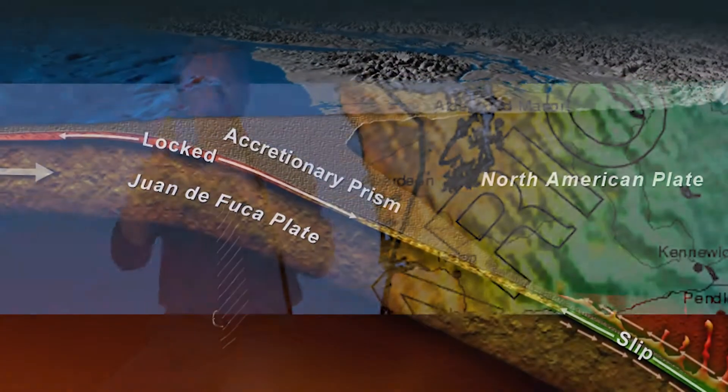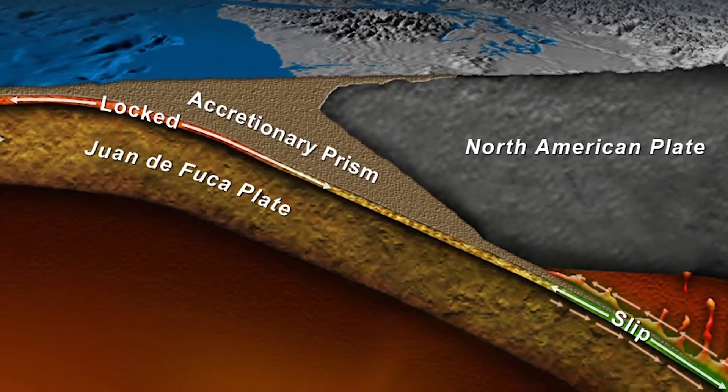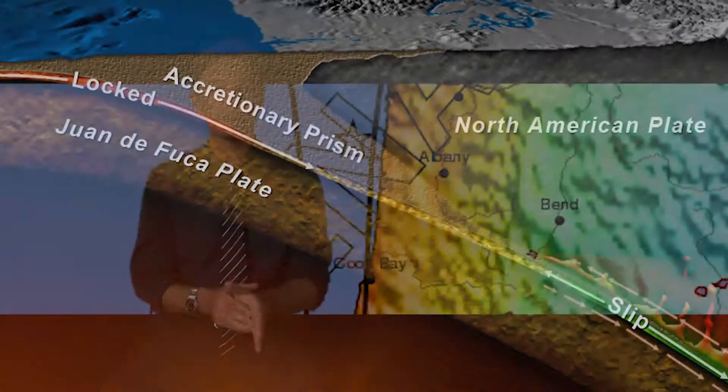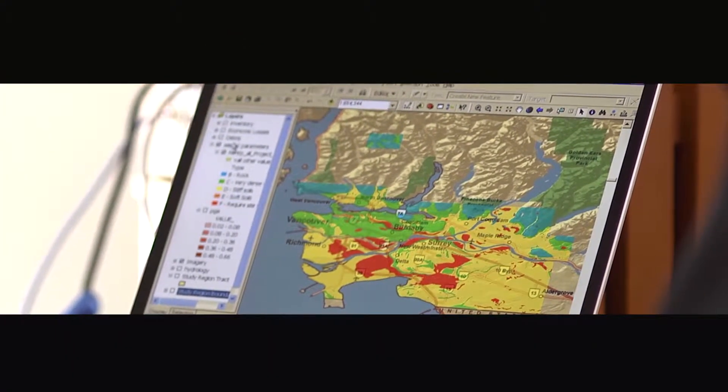The Cascadian Subduction Zone is a long, sloping fault line where the Juan de Fuca Plate pushes underneath the North American Plate. A major earthquake along this fault line of magnitude 8 or 9 is very possible in the next 50 years. How are plans developed to cope with such an unpredictable threat, and who is ready to respond to these events, and what systems will they use to protect lives and property?